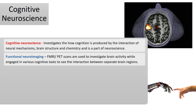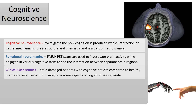It's not just functional neuroimaging that's used — cognitive neuroscientists also use case studies, such as brain-damaged patients who may have cognitive deficits like problems with memory. When we compare them to healthy brains, these are really useful in showing how some aspects of cognition are separate, and we look at this in some detail in the biopsych unit when we look at localisation of function in the brain.